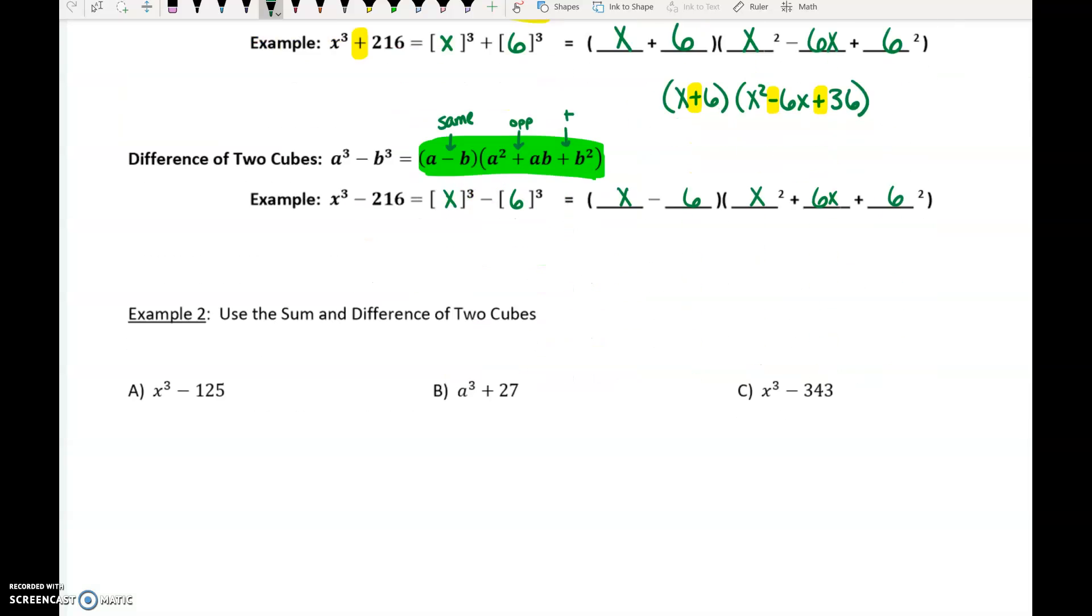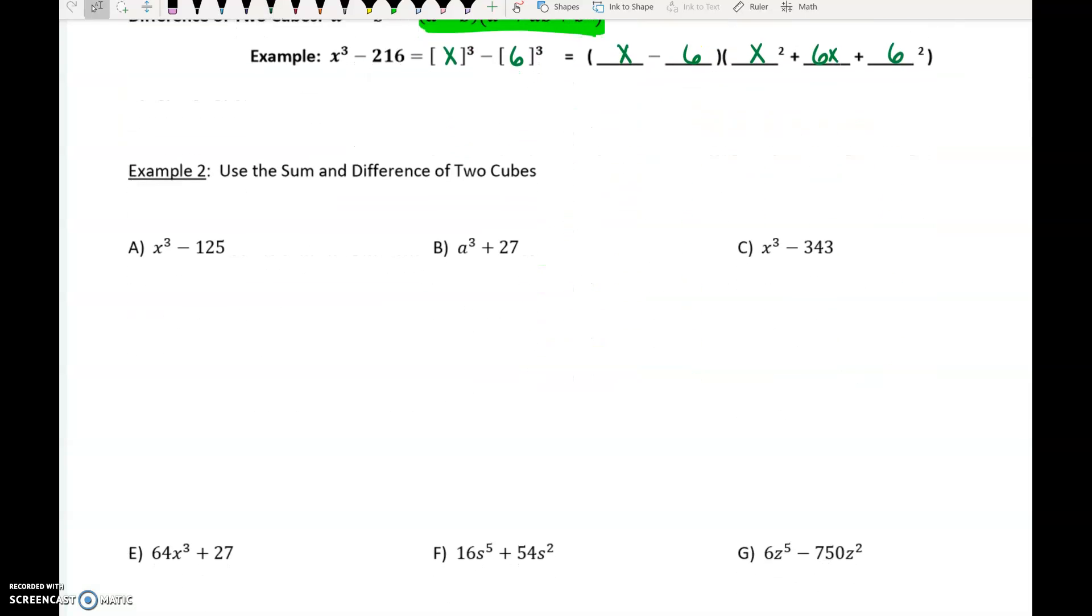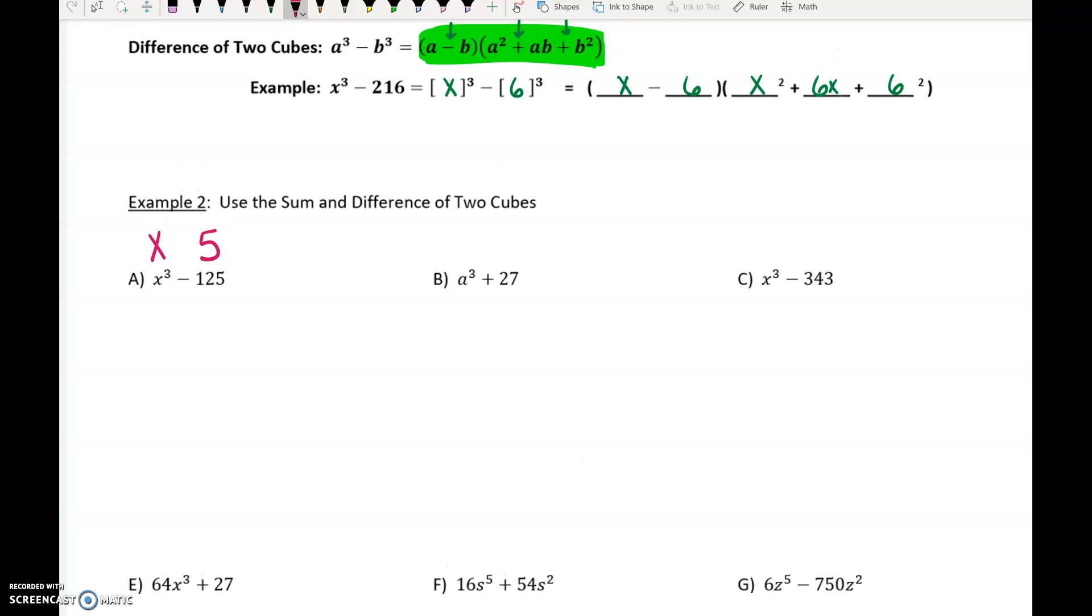Let's actually try some of these. X cubed minus 125. X cubed is the perfect cube of X. What is 125 the perfect cube of? 5. So in our form, everywhere we see an A, we're going to put an X. Everywhere that we see a B, we're going to put a 5. And here's how I do this: X, 5. Then it says A squared, so X squared. The middle term, I multiply them together. The last term, I square the second number. Do you notice I didn't put any symbols in there?